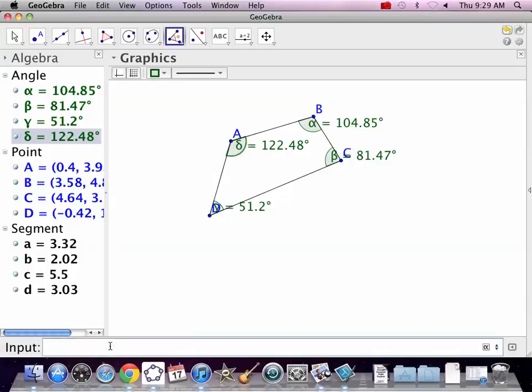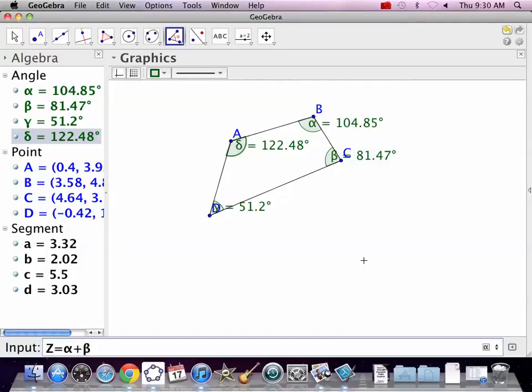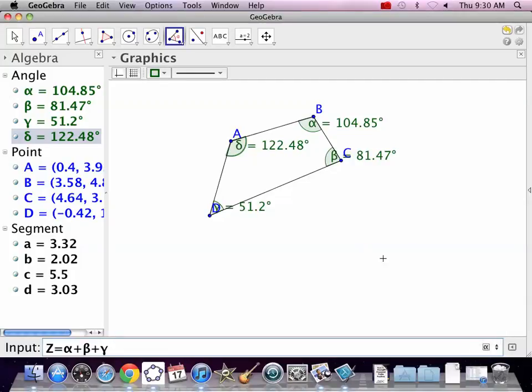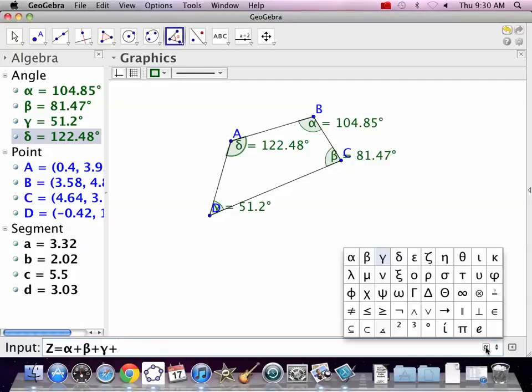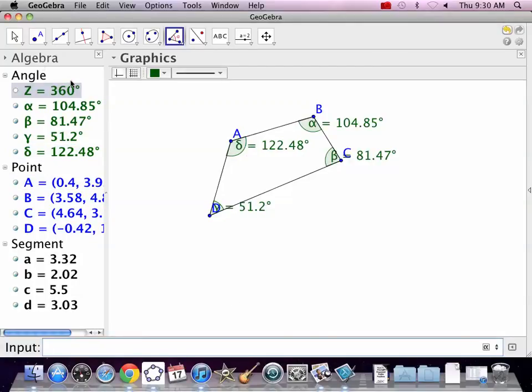Well, let's see what they actually add up to. So come down to the input line, Z equals, and come over here to the right where we can click the alpha, beta, gamma. Alpha plus beta plus gamma plus. Even if you don't know the names, the symbols are right here: alpha, beta, gamma, delta. And we hit enter, and it says Z equals 360.